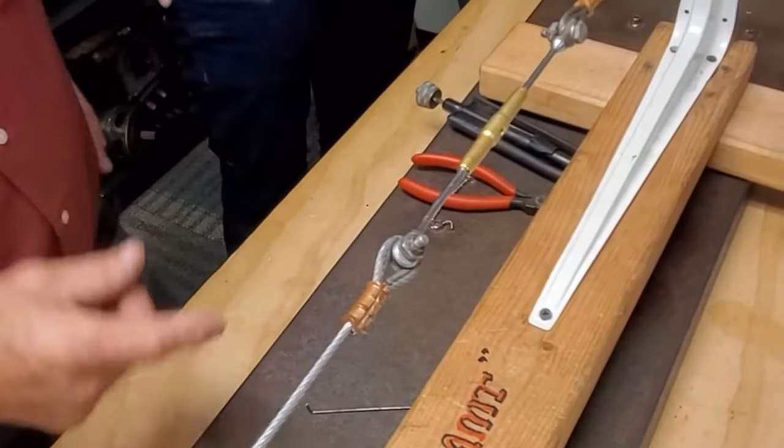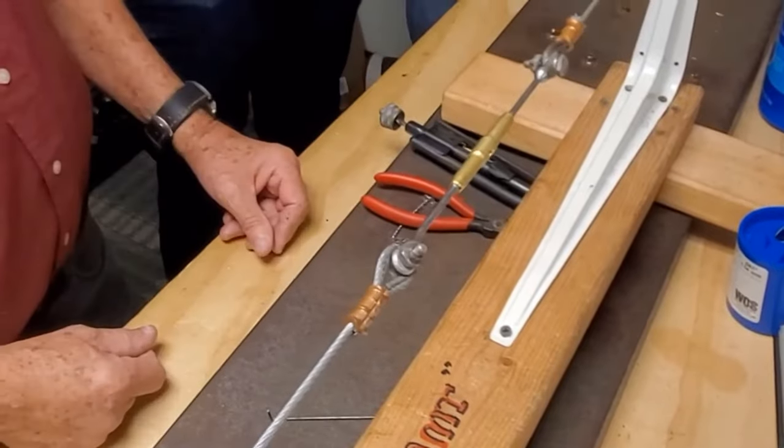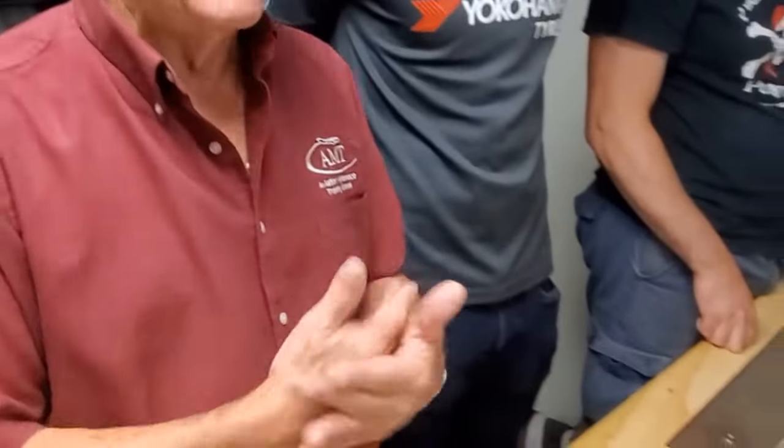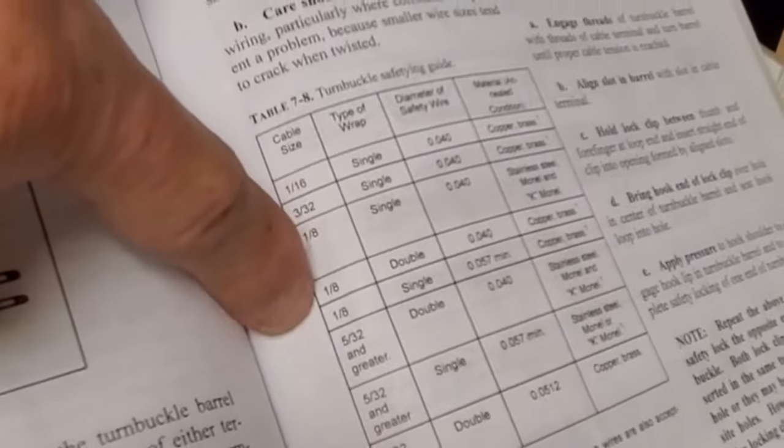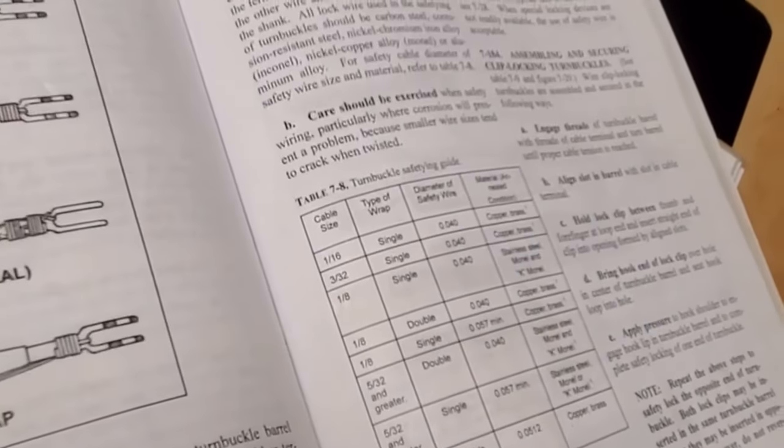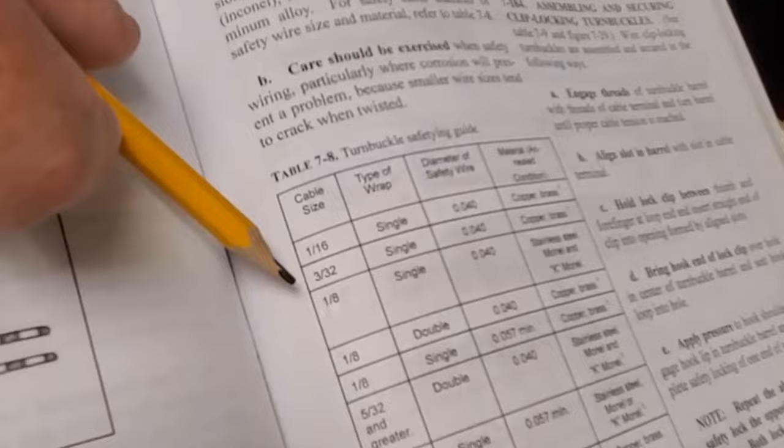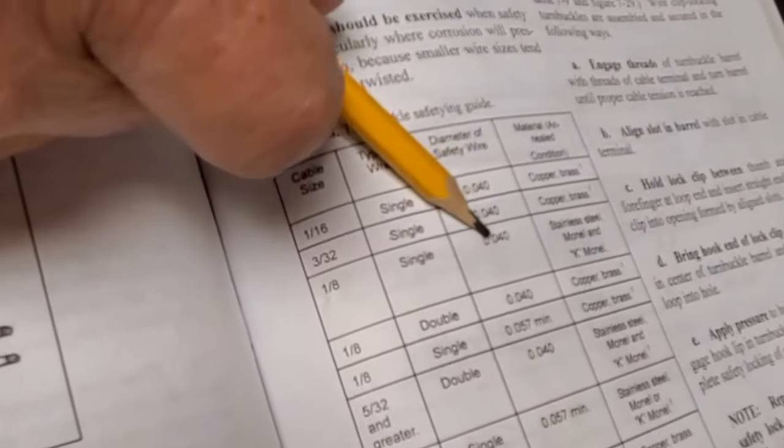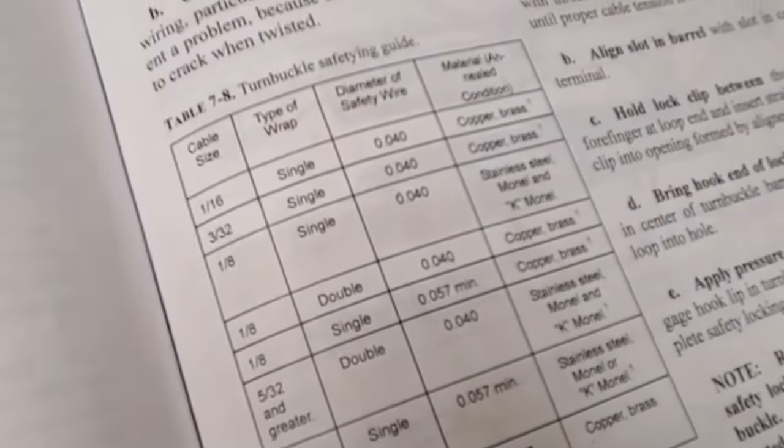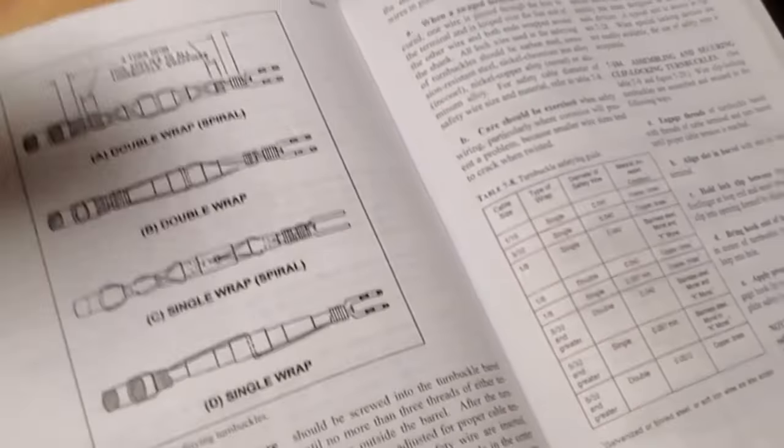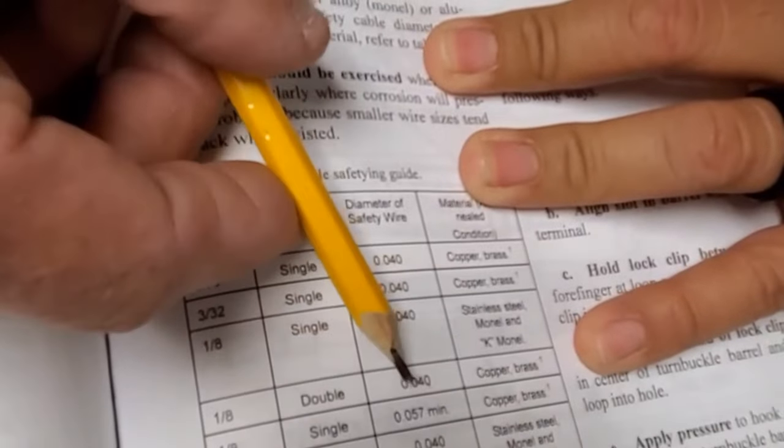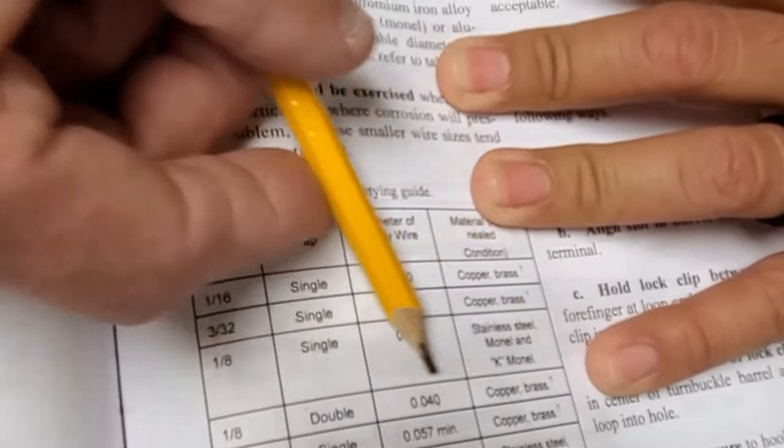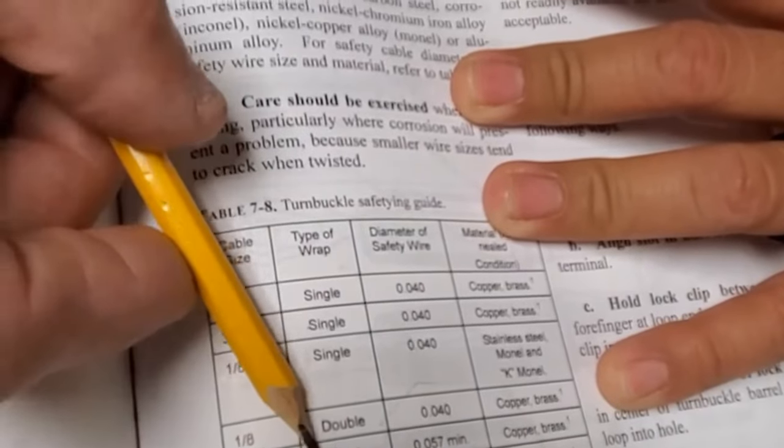So now I need to safety wire this, but the book didn't tell me. I go over here and it says 1/8 right, but I got 1/8 here, 1/8 here, 1/8, I got three 1/8s, which one am I going to use? This is 1/8 single if I'm 40,000, if it's stainless steel or monel. That's not stainless steel, that's some copper brass, so I'm not going to use that one. This one here says double 40,000 if it's copper or brass.